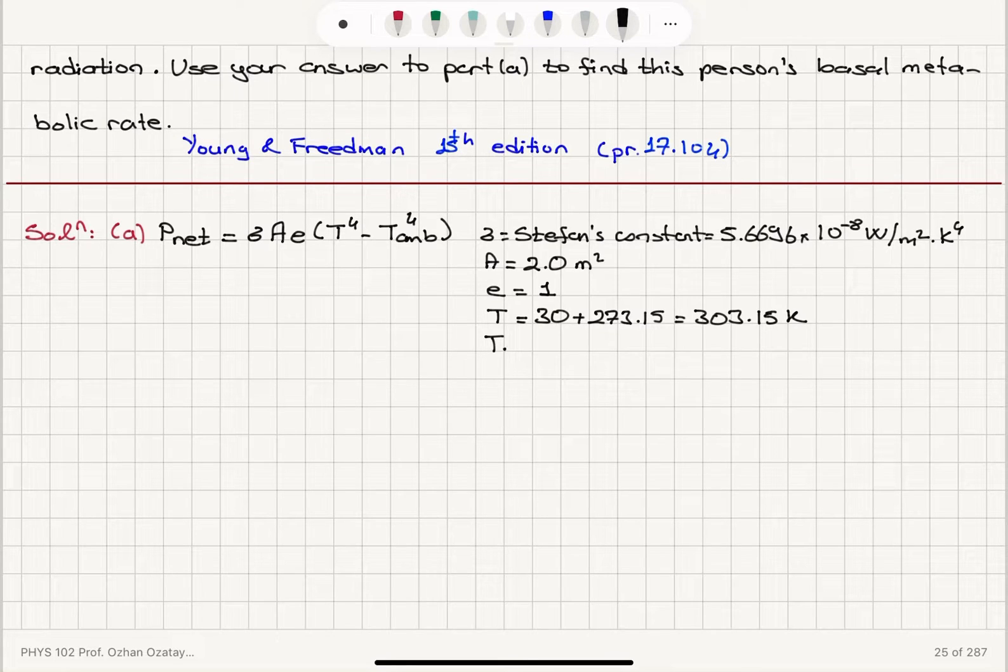The ambient temperature is 18 degrees Celsius, which is 18 plus 273.15, that is 291.15 Kelvin.